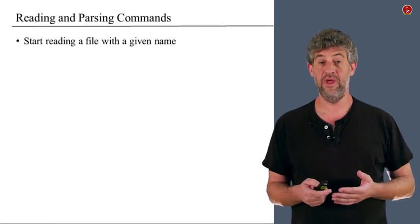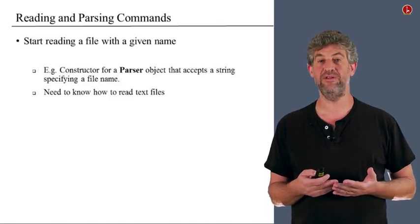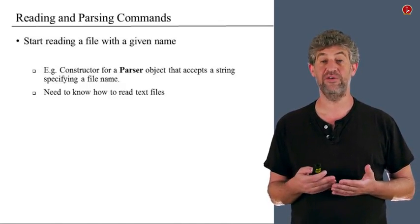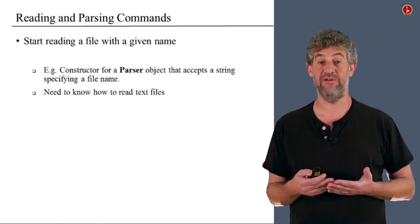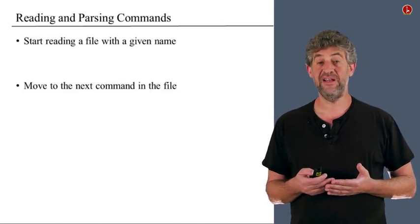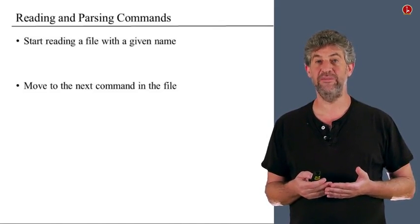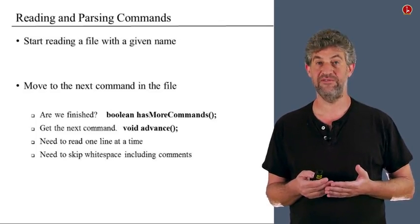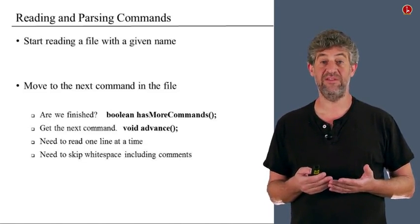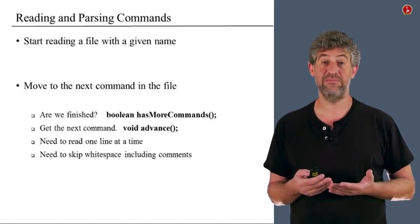What does the parser need to do? First, it needs to be able to read a file with a given name. If you implement it as a class, you may want the constructor to accept the file name and open the file for reading. You'll need to know how to handle and read text files in your implementation language. Second, once you've started reading a file, you should be able to get the next command each time. You'll need to know whether you've finished the file — are there more commands or have you reached the end? Then read the next command into some kind of string, which requires string handling capability and line-by-line reading.